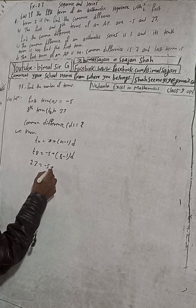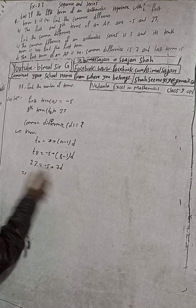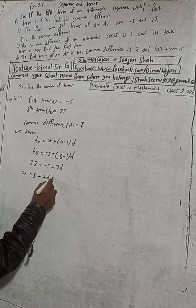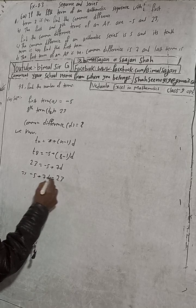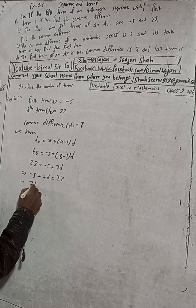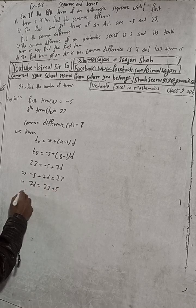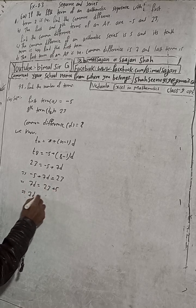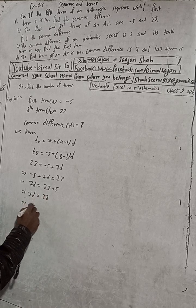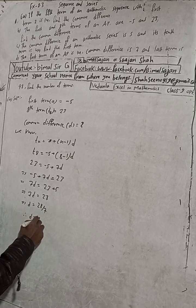So 23 = −5 + 7D. Rearranging: 7D = 23 + 5, which gives 7D = 28, therefore D = 28/7 = 4. The answer is D = 4.